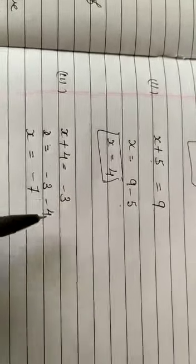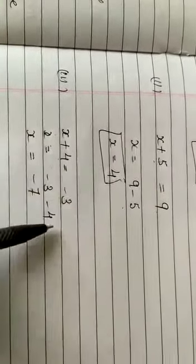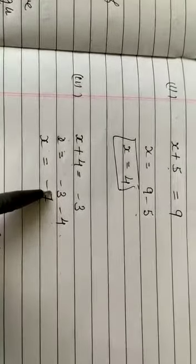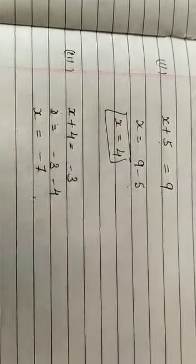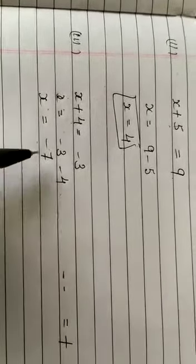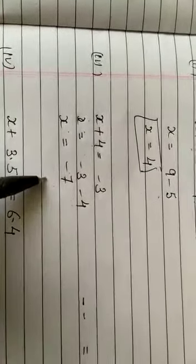Third sum: x plus 4 equals minus 3. We have to find the value of x. We take this 4 to the right hand side of the equation. It becomes negative. So x equals minus 3 minus 4. We know in mathematics, minus minus becomes plus. Therefore, minus 3 minus 4 equals 7, and the sign will be negative. The answer is x equals minus 7.